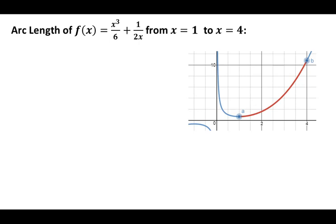We're going to use the integral formula for arc length to find this, where L equals the integral from a to b of the square root of the quantity 1 plus f prime of x squared, dx. We're jumping straight into this formula — if you're not sure where it comes from, I'm linking to a precursor video at the end. The first thing we want to do is find the derivative f prime of x.